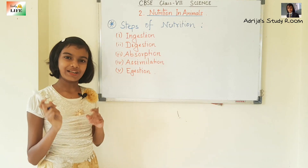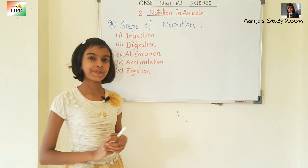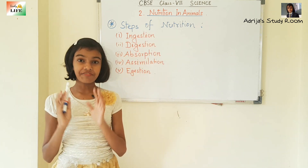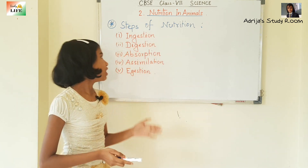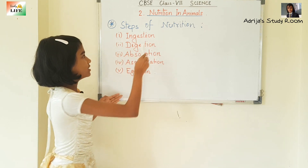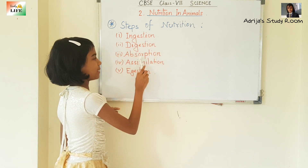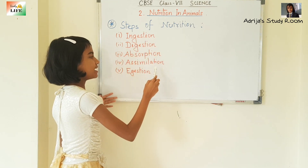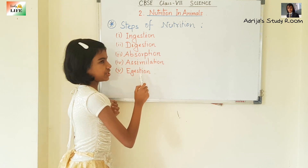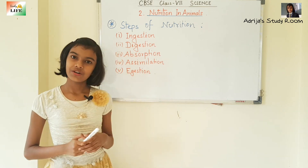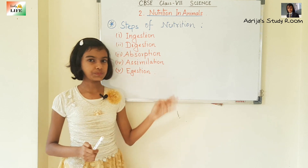Now let's start with the steps of nutrition. There are five steps of nutrition. They are ingestion, digestion, absorption, assimilation, and egestion. We are going to learn about each of these now.